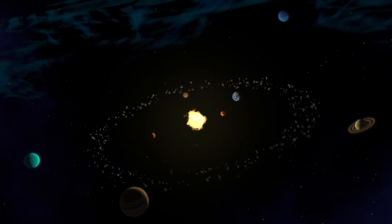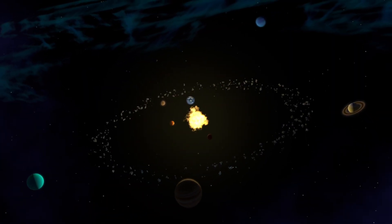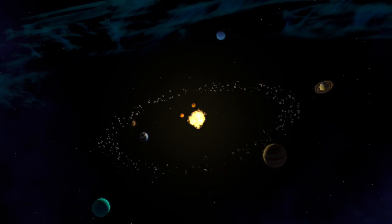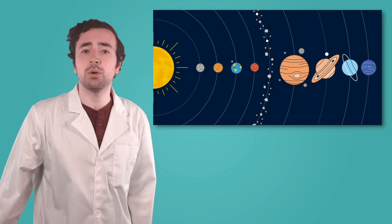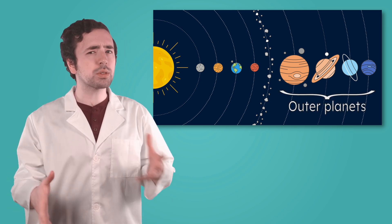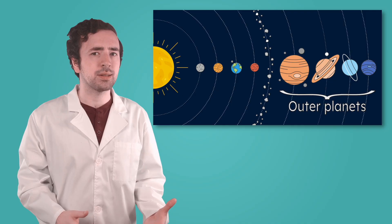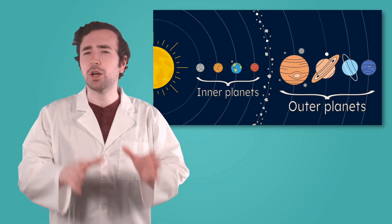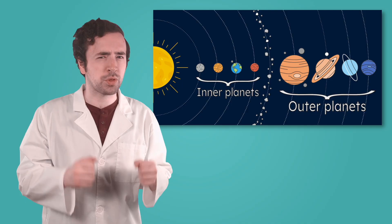Our solar system has eight planets. Scientists divide them into two groups, inner planets and outer planets. On the far side of the solar system are the outer planets. They're much bigger than the others and are mostly made of gas or ice. The inner planets are the ones closer to the sun. These are smaller, rocky worlds with hard surfaces.